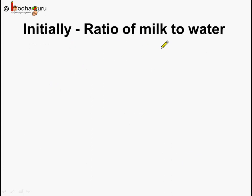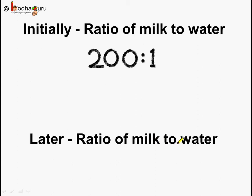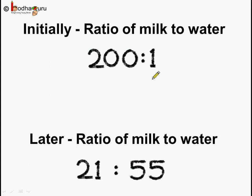Initially the ratio of milk to water was 200 is to 1, meaning for 200 jugs of milk there was just 1 jug of water. But later the ratio became 21 is to 55 — for every 21 jugs of milk, 55 jugs of water were added. So much dilution occurred because each person was adding water instead of milk, thinking it would make no difference.